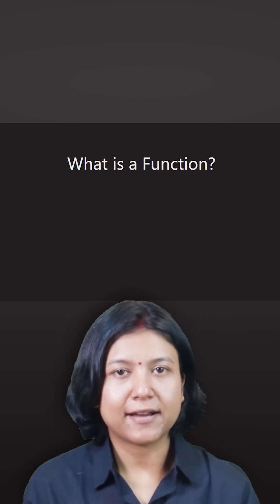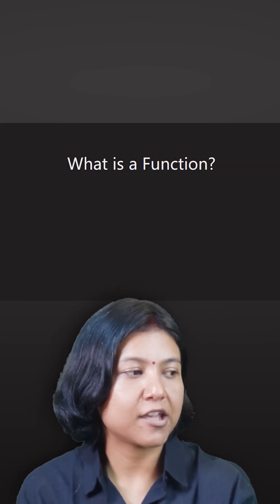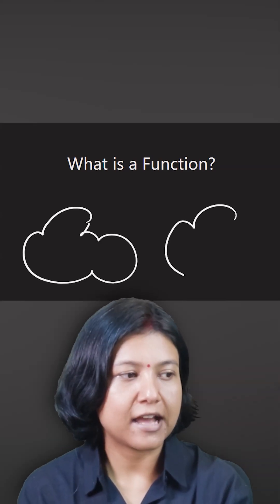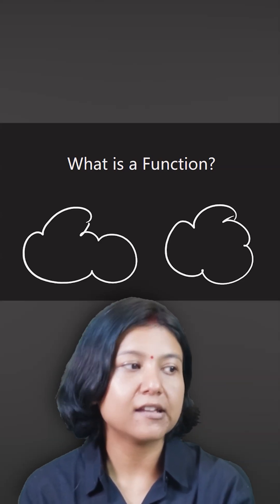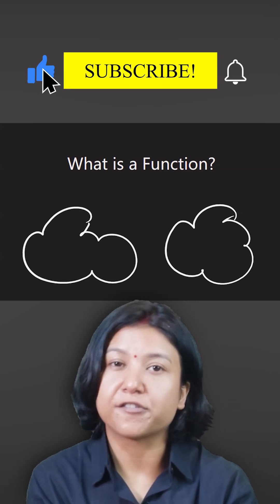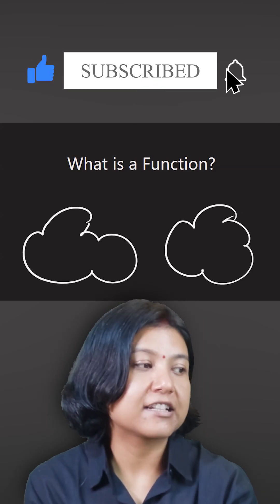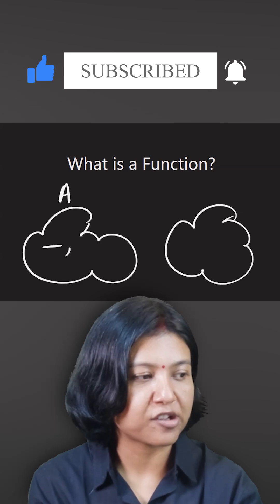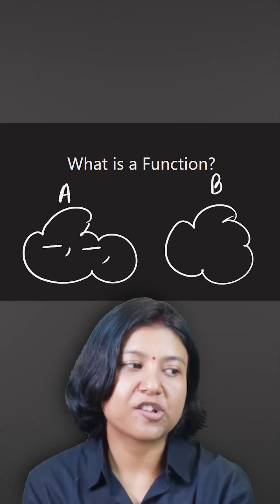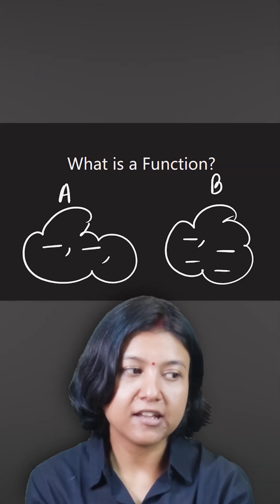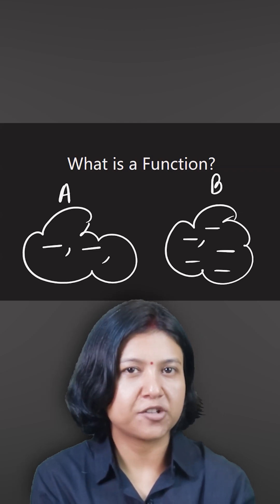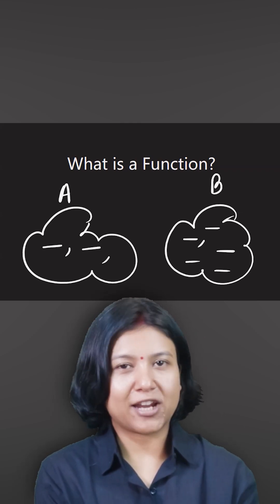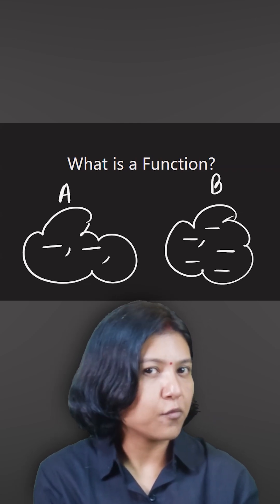So what is a function in mathematics? Let's say you have two sets. If I have a connection — a relation — that tells me how the elements of A are connected to the elements of B, we call it a relation, because they are somehow related. I'm trying to relate the elements of A with the elements of B.